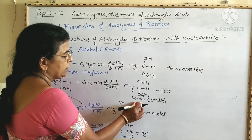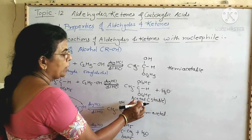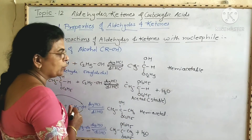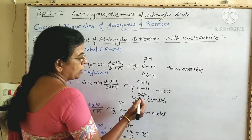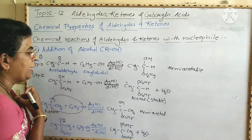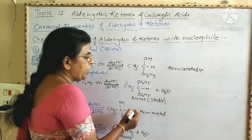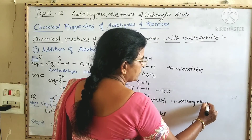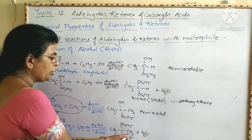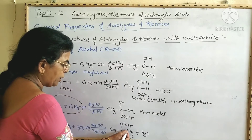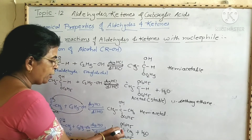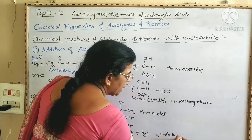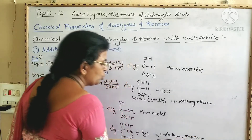Now we are going to give names for these acetals. For the first acetal from acetaldehyde: numbering gives positions 1 and 2, at position 1 there is an OC₂H₅ group — ethoxy group — attached to carbon 1, and there are two carbon atoms, so the parent chain is ethane. Therefore the name of this compound is 1,1-diethoxyethane. For the second acetal from acetone: numbering gives positions 1, 2, 3 — this is propane. At position 2 there are two ethoxy groups. Therefore it is 2,2-diethoxypropane.